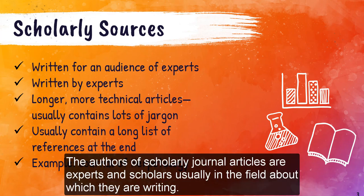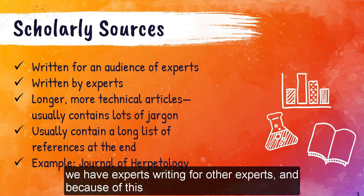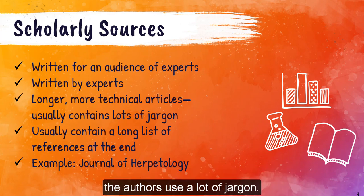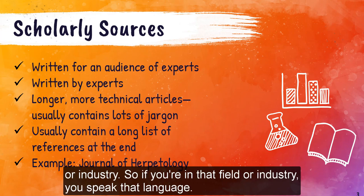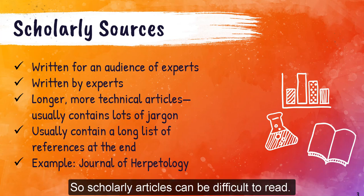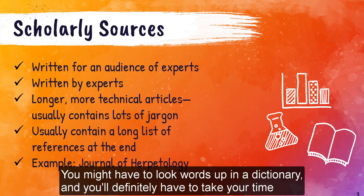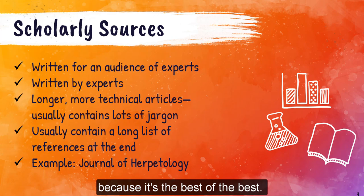The authors of scholarly journals are experts and scholars, usually in the field about which they are writing, and their audience is an audience of other experts. So with scholarly publications, we have experts writing for other experts, and because of this, the authors use a lot of jargon — a specialized language or vocabulary unique to a field or industry. As a student, you don't yet know the jargon of your own major, let alone another field. Scholarly articles can be difficult to read; you might have to look words up in a dictionary. But it's very much worth it to use scholarly information because it's the best of the best.